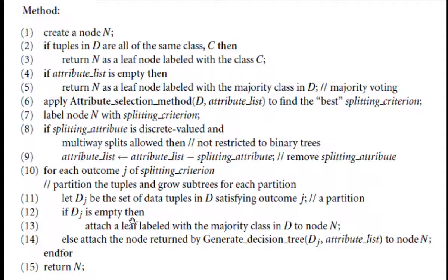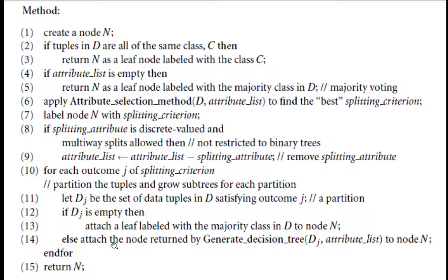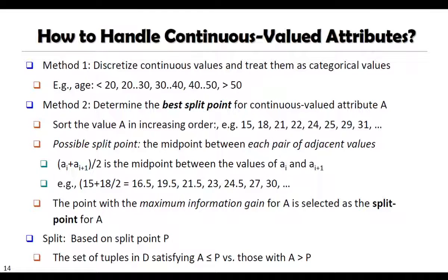If Dj is empty, we attach a leaf labeled with the majority class in D to the node. Otherwise, we attach the node returned by recursively calling the generate decision tree procedure. After processing all outcomes, we return N. This is how the decision tree works recursively.